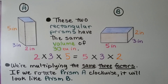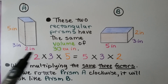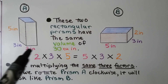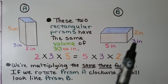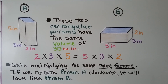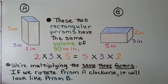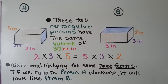Here we have rectangular prism A and rectangular prism B. These two rectangular prisms have the same volume of 30 cubic inches. Prism A has a length of 2, a width of 3, and a height of 5. Prism B has a length of 5, a width of 3, and a height of 2. They're using the same three factors, and if we rotate prism A clockwise, it'll look like prism B.